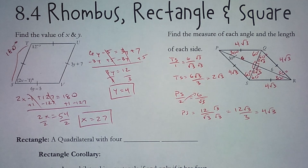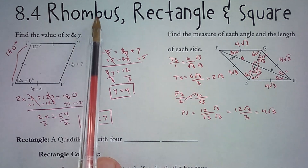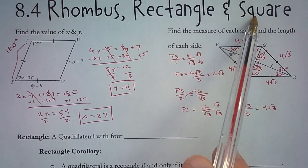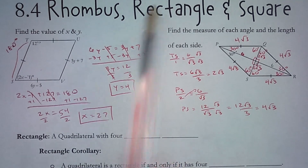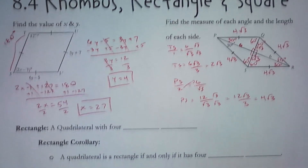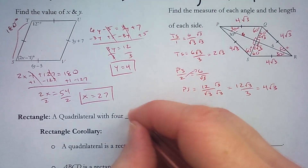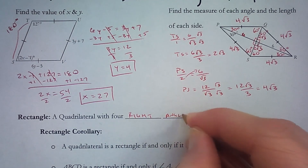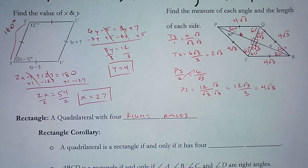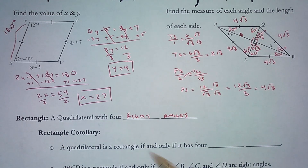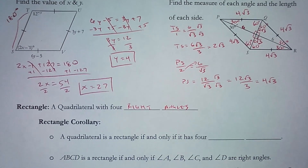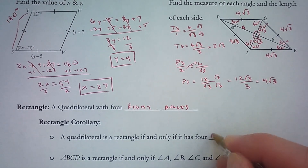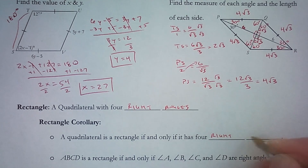Today we will continue our lesson on Rhombus, Rectangle, and Square, focusing on the rectangle. A rectangle is a quadrilateral with four right angles. The rectangle corollary states that a quadrilateral is a rectangle if and only if it has four right angles.